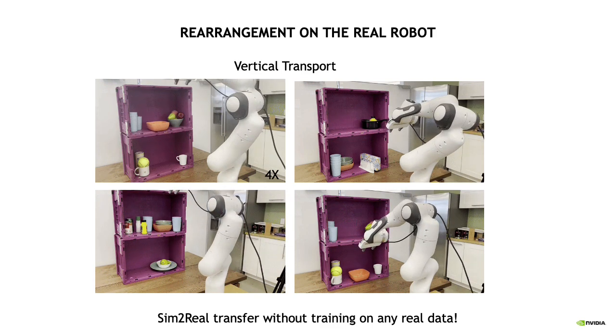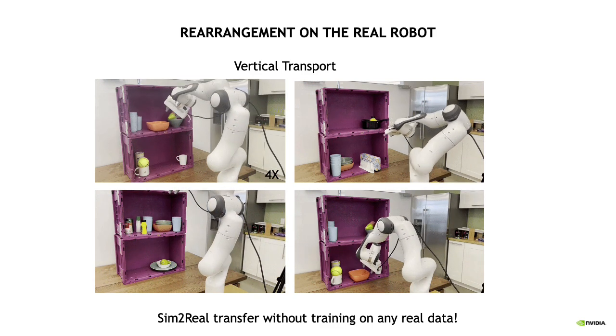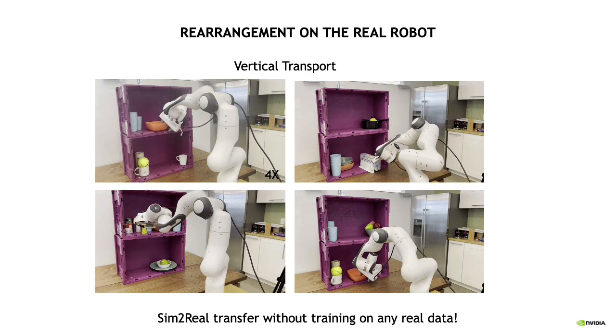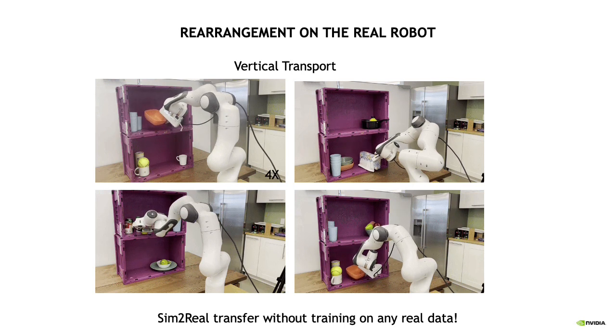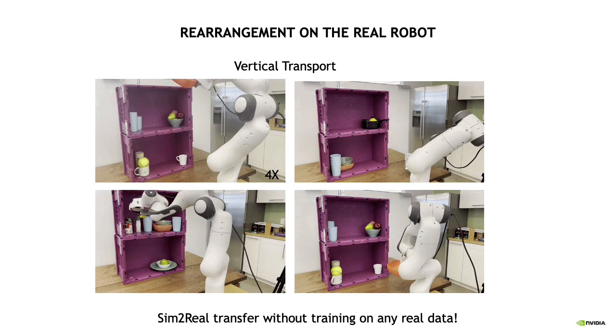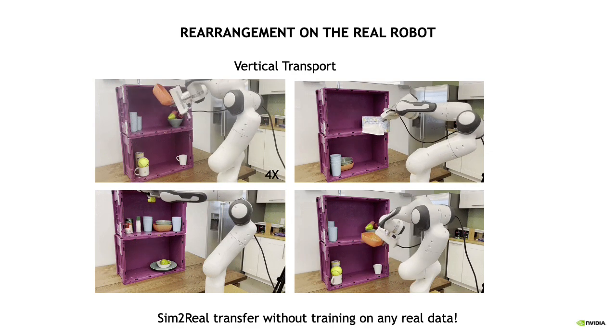Our Cabinet model achieves zero-shot sim-to-real transfer on the real robot without needing to train on any real noisy point cloud data. It generalizes to completely unseen objects in cluttered environments.